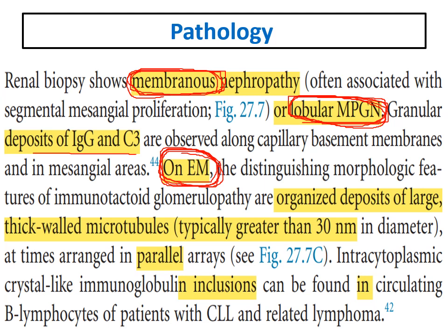You cannot diagnose a patient with immunotactoid except after electron microscopy examination. The characteristic finding is microtubular structures with a diameter greater than 30 nanometers. The diagnosis of immunotactoid depends only on the presence of microtubules with a diameter more than 30 nanometers on electron microscopy.